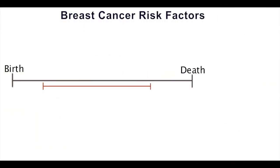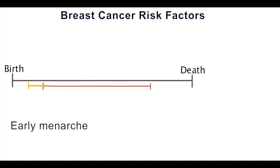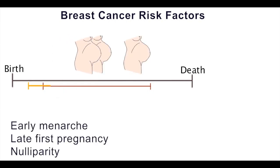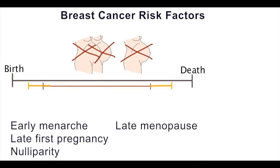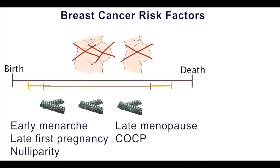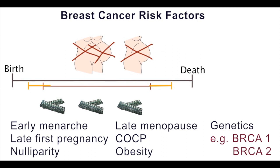The etiology of breast cancer is multifactorial. An increased lifetime exposure to oestrogen is thought to increase the risk of breast cancer. This includes early menarche, late first pregnancy, nulliparity, late menopause, taking the combined contraceptive pill, and obesity. When it comes to genetics, 5% of cases have an identifiable genetic predisposition. This includes BRCA1 and BRCA2 genetic mutations, which result in the patient having a high risk of developing breast or ovarian cancer.